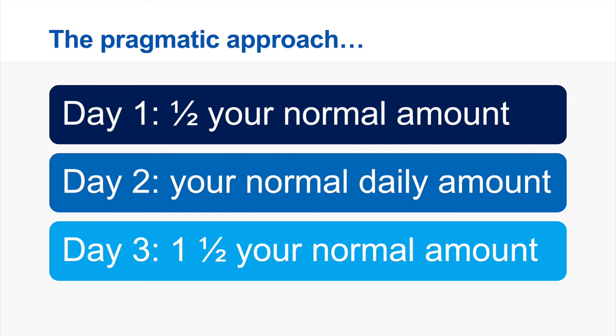We also look at a very pragmatic approach to FODMAP reintroduction. If you find the quantities given slightly difficult or not realistic for you, try half your normal amount on day one, a full amount that you would normally have had prior to this diet on day two, and one and a half times your normal amount on day three. For instance, if you normally have three cloves of garlic in every meal, you might have one and a half cloves on day one, three cloves on day two, and four and a half cloves on day three.